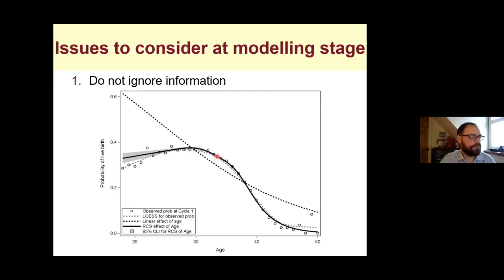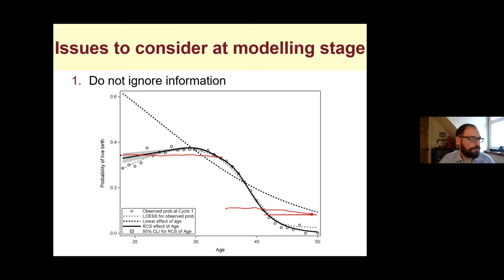You can see why dichotomizing female age into two groups is problematic. If you split at age 34, you might find a probability of live birth of 35% for everyone under 34 and 10% for everyone over 34. It's unreasonable to think that a 34-year-old has a 35% chance and a 35-year-old drops straight to 10%. We need to keep the raw data and fit a clinically recognized non-linear relationship with the outcome.